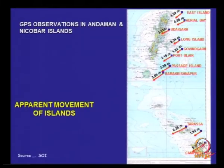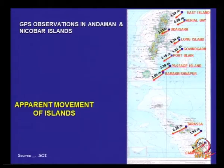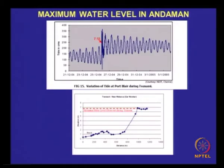Moving on to Andaman and Nicobar Islands — GPS observations show that the islands themselves have moved in the direction and by the magnitude indicated in black. The maximum water level recorded in Andaman was close to 7.1 meters.